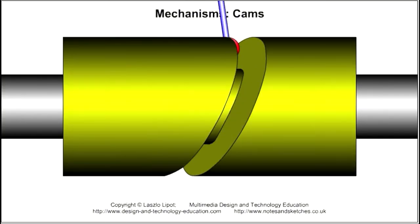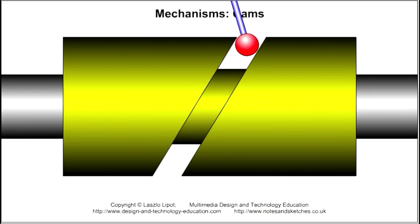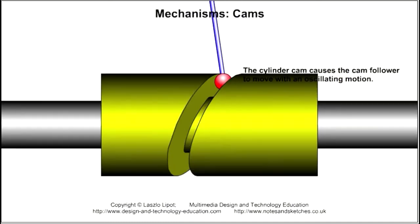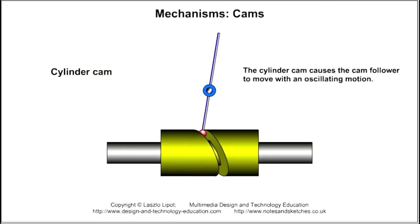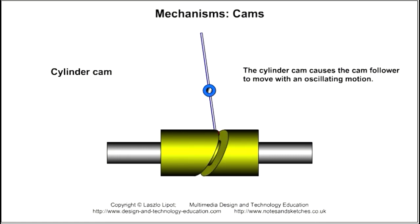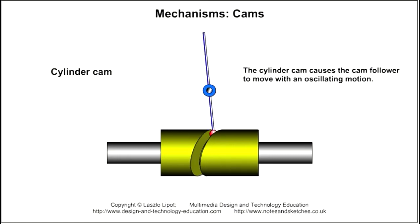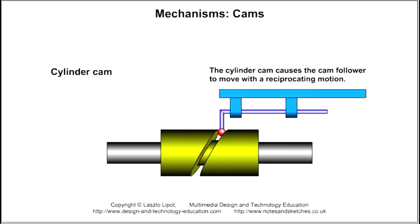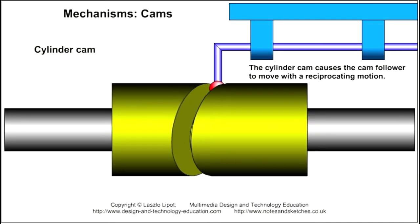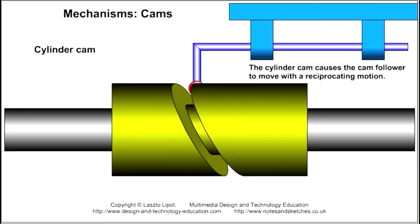The cylinder cam consists of a cylinder mounted on a camshaft. The cylinder has a groove cut into it. The cam follower locates in the groove, and the rotating cylinder cam causes the cam follower to move with either an oscillating motion or a reciprocating motion.